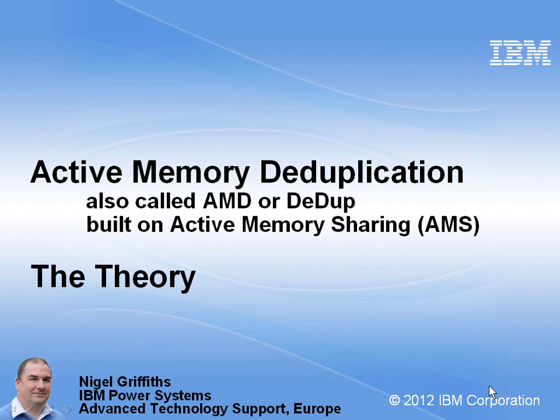Hello, I'm Nigel Griffiths, a working power systems ATS Europe. In this movie we'll be looking at active memory deduplication. It's also called AMD for short, which of course clashes with a well-known chip manufacturer, or dedupe. We have to be careful with that one too, because the disk manufacturers are using dedupe to deduplicate disk blocks.